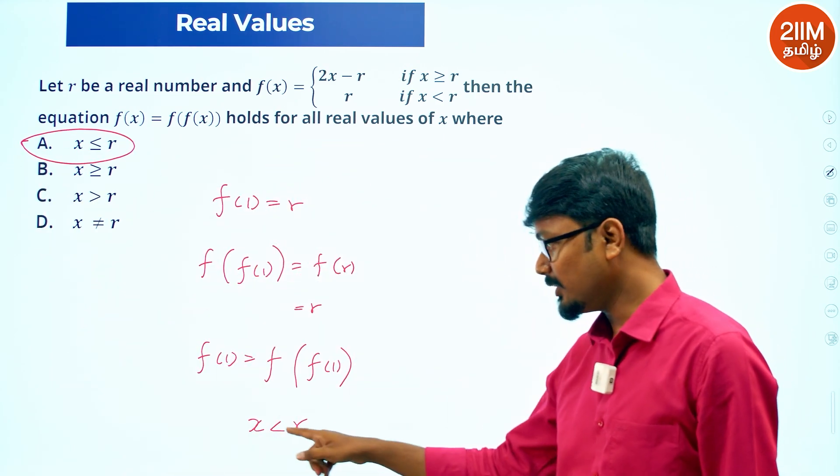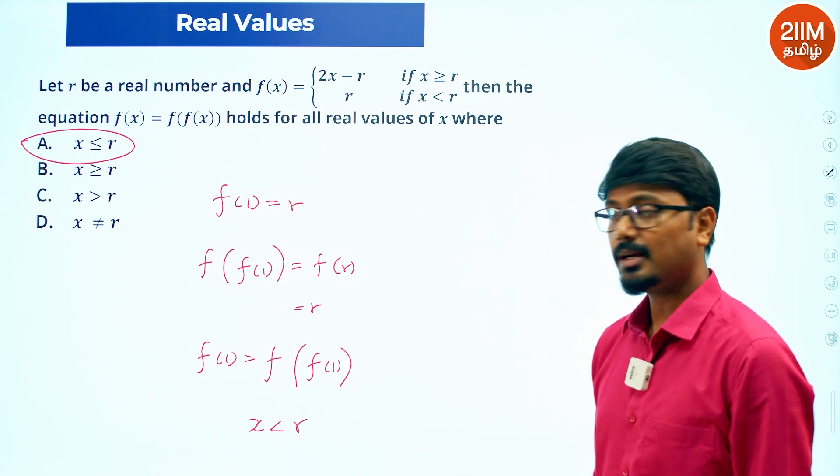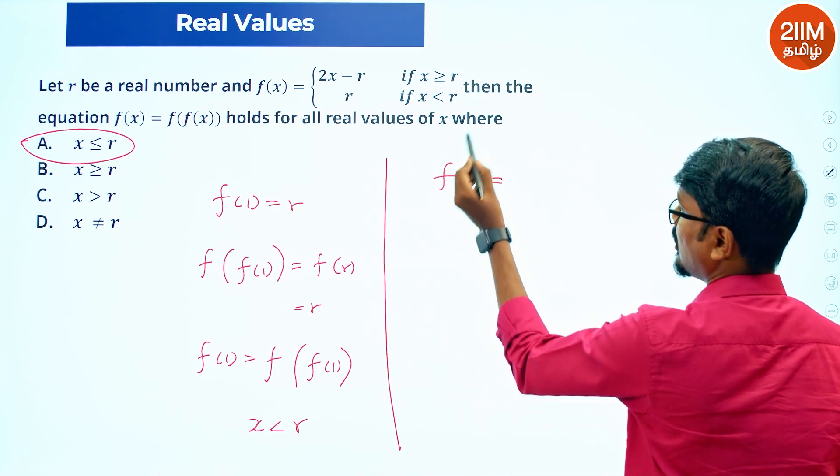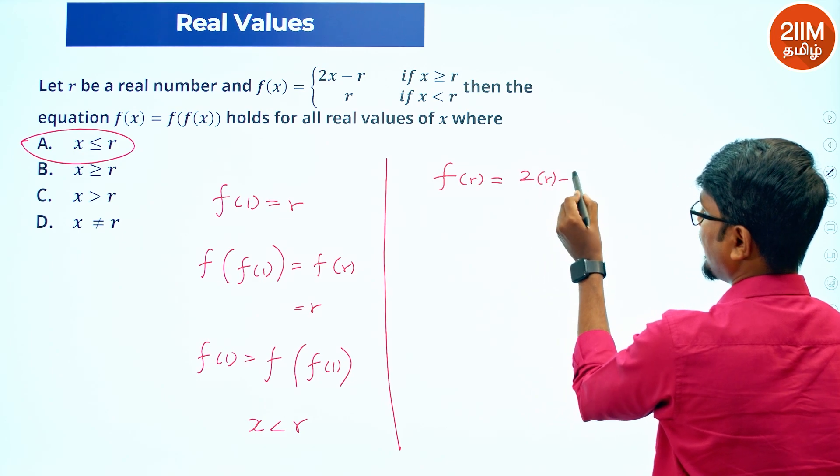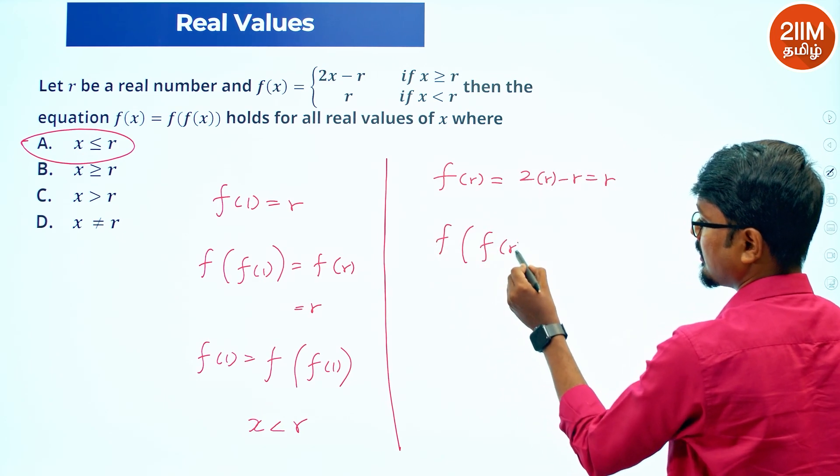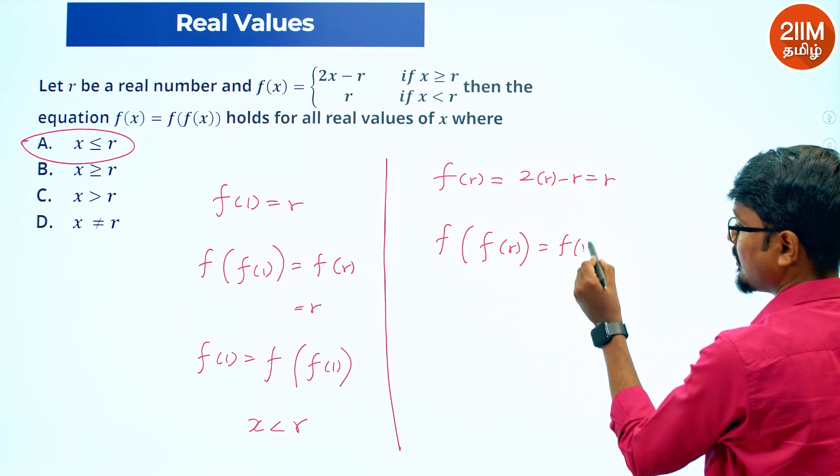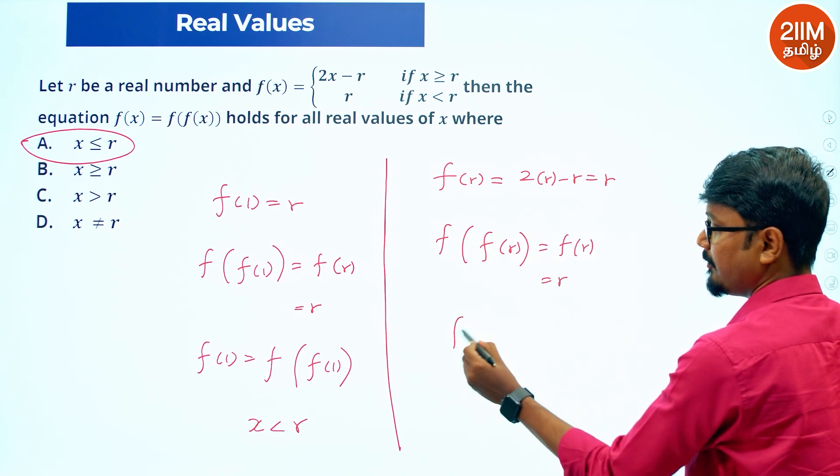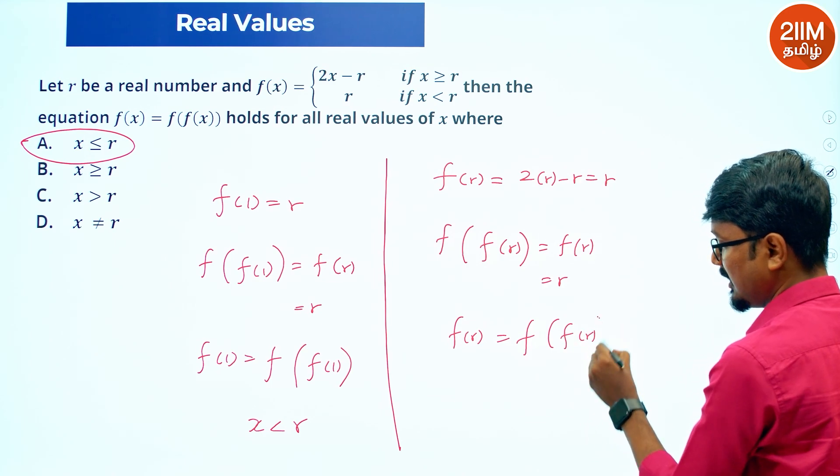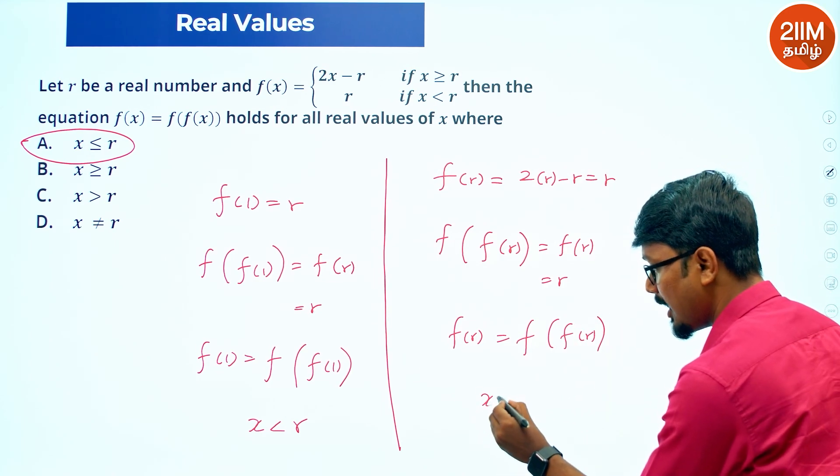Now when x is equal to r, let's check. f of r we can solve: 2 times r minus r equals r. And f of f of r: f of r again, which is again r. So f of f of r equals r. So x is equal to r works the same.